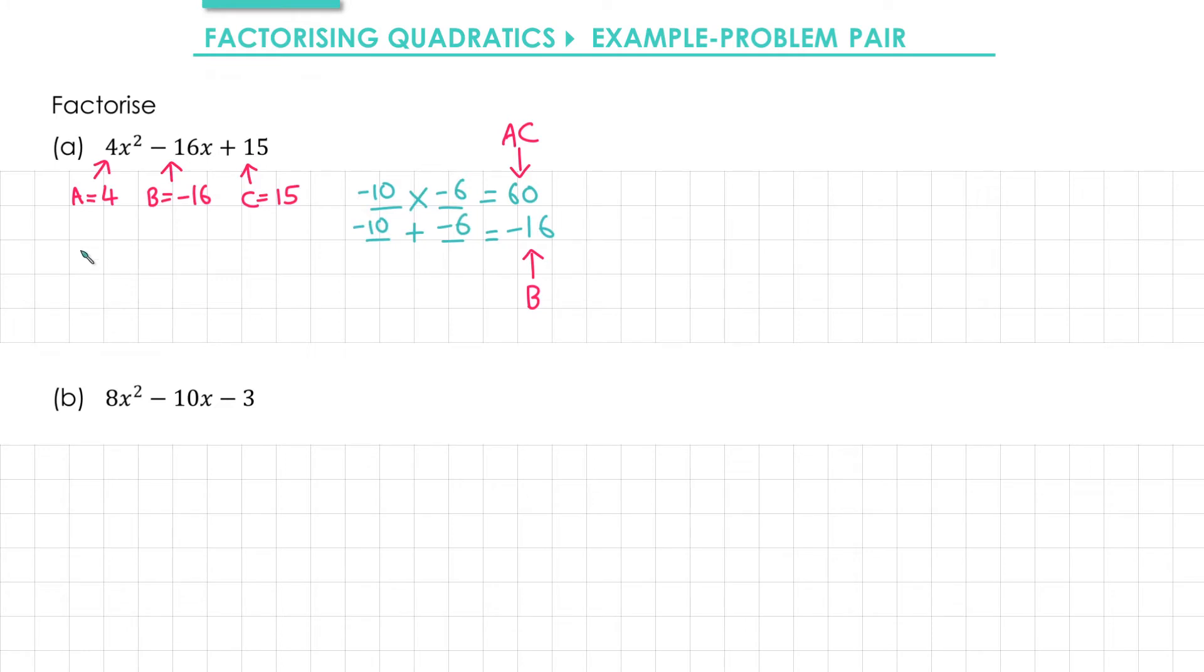The next step is to write two pairs of brackets. And in each pair of brackets I'm going to write 4x. If you've not seen this method before, you might be thinking 4x multiplied by 4x would give me 16x squared, which is 4 times bigger than what I want. However, what you'll see in a minute is that some terms will cancel which will leave us with 4x squared.